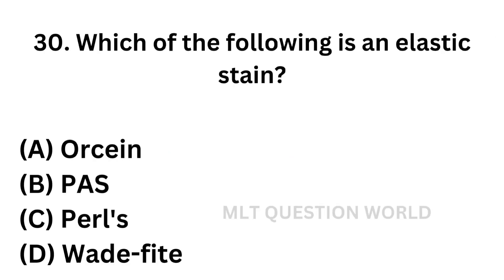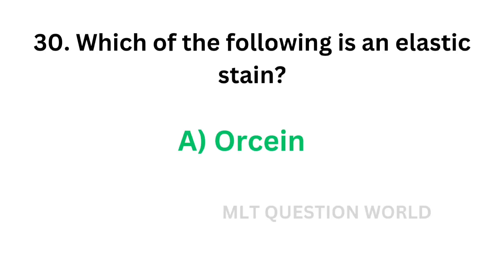Question number thirty: Which of the following is an elastic stain? Option A: Orcein, Option B: Periodic acid-Schiff stain, Option C: Pearl stain, Option D: Weigert stain. The correct answer is Option A — Orcein. Orcein is an elastic stain.